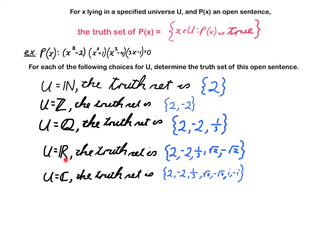If U is the set of reals, we have to throw in plus or minus square root of 2. And if U is the set of complex numbers, we can add plus or minus i to the truth set.